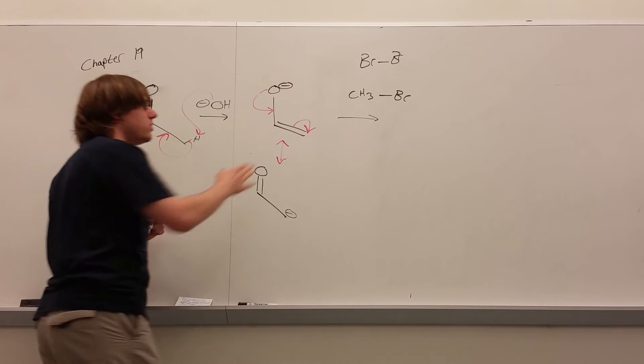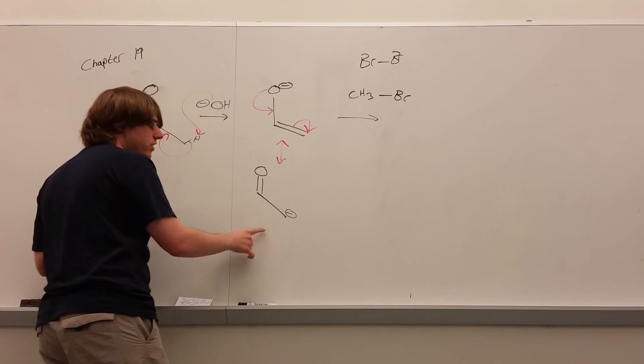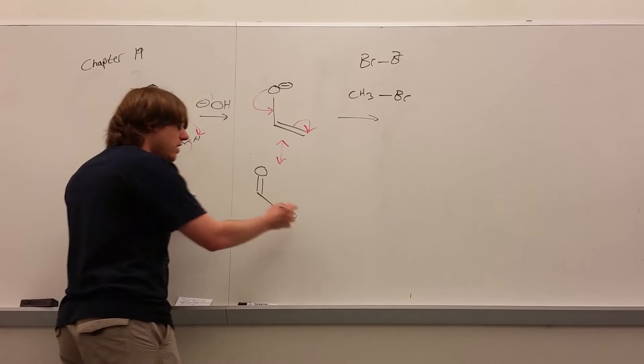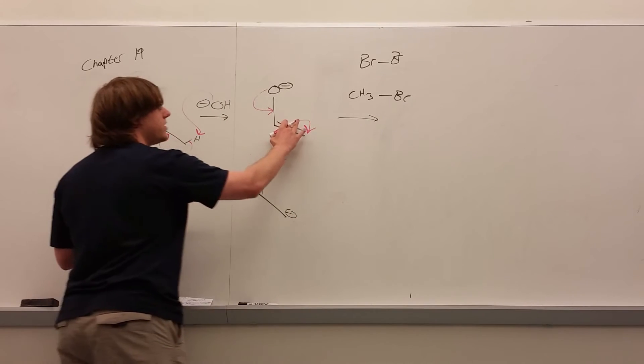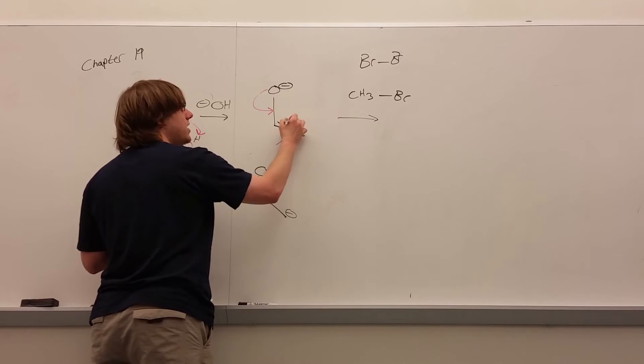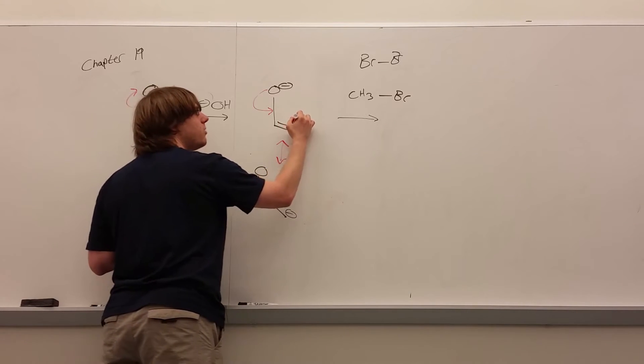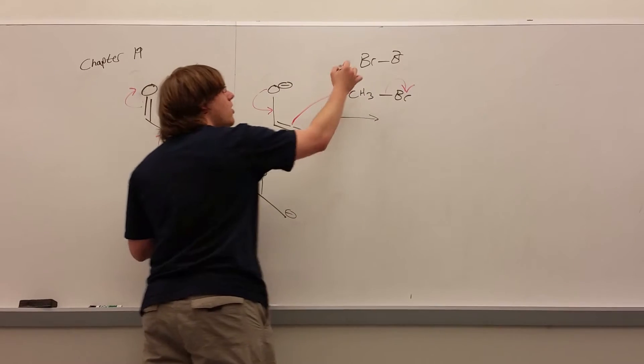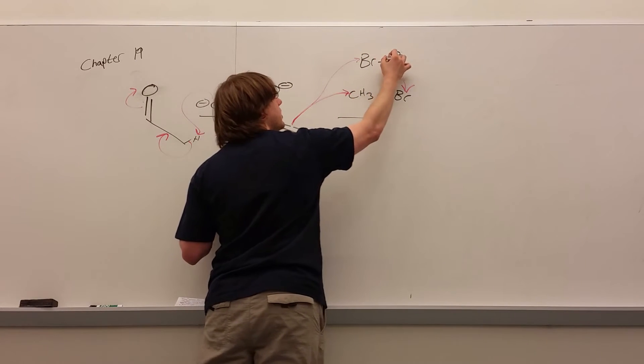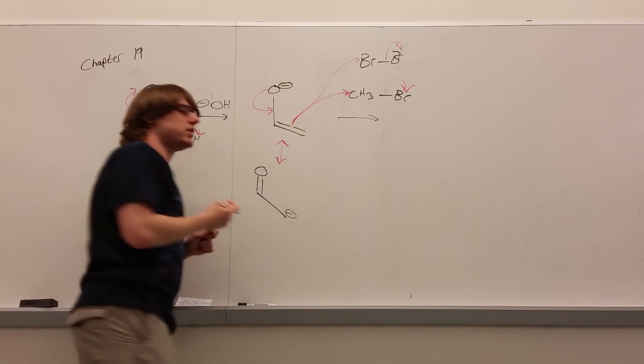In either case, the way you would draw this is either you draw the resonance, get the negative on that carbon, and then that negative carbon goes out and attacks whatever. Or you can just draw straight from the enolate itself. And in that case, you draw from the center of the carbon-carbon double bond to whatever it's attacking. Either the carbon and the bromine gets kicked out as a leaving group, or if there are two halogens, you can attack that and the other halogen gets kicked out.